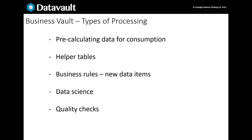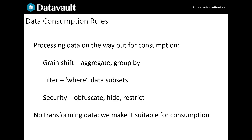Let's look at the first item on the list. Some processing might be needed to get data out of the vault. Your users might not want the full granularity of data held in the raw vault — they may want aggregated, filtered or masked data in their reporting marts. The point here is the data isn't transformed; it's simply added up, grouped, masked or otherwise processed before it's consumed.